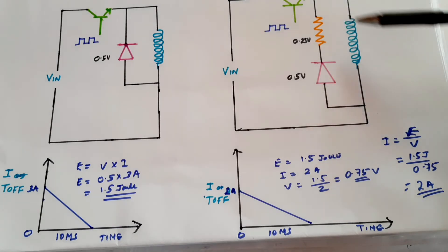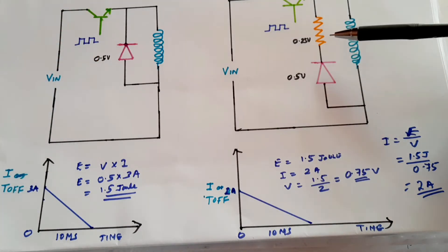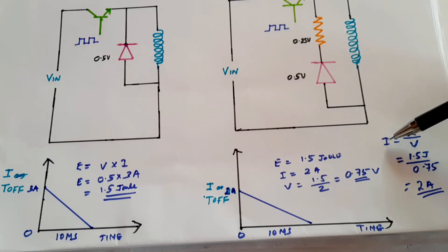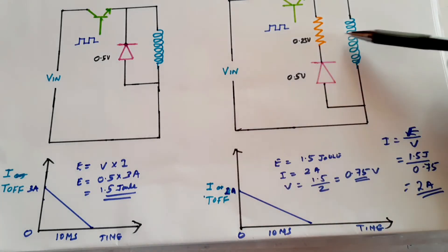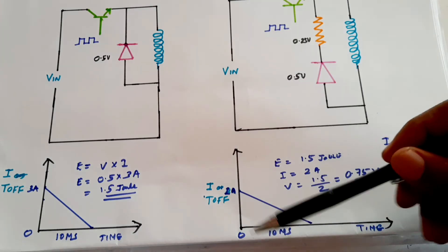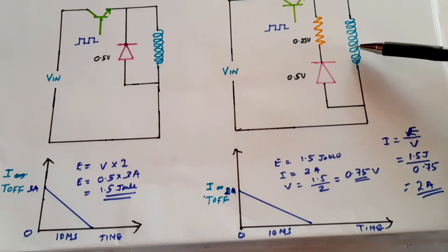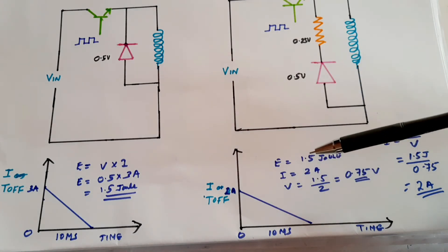Earlier, each electron only needed 0.5 volts; now it has become 0.75 volts. So checking the current: the energy is 1.5 joules and now each electron has to expend 0.75 volts, so the current will reduce to 2 amperes. That means if we connect a resistor in the circuit, the peak current will be reduced to 2 amperes — earlier it was 3 amperes. So the inductor does not simply have the property of opposing any change in current.